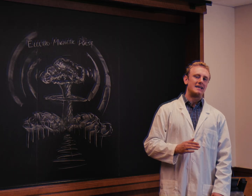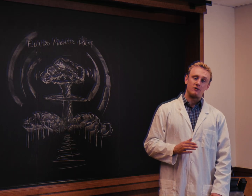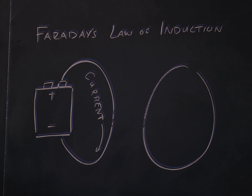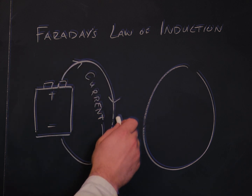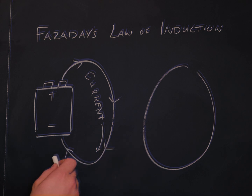But how exactly does an EMP work, and how do nuclear bombs cause them? The devastating power of an EMP hinges on the same principles as a common radio, just applied on a much larger scale. Faraday's law of induction states that the movement of electrons, known as current, generates a magnetic field.